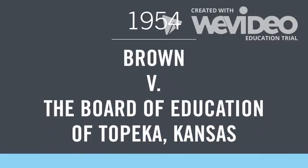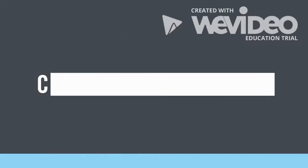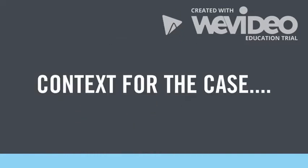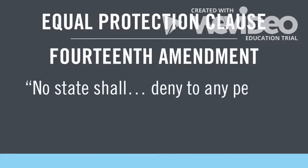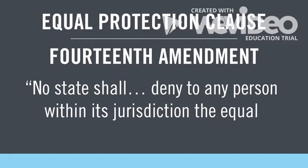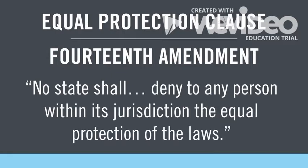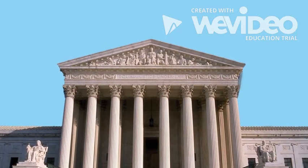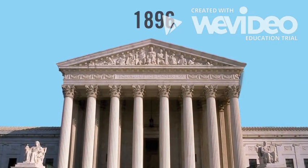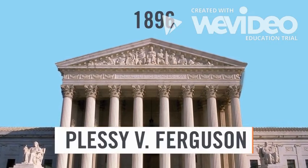To understand this landmark case, it's important to appreciate some context. The Equal Protection Clause of the 14th Amendment reads: 'No state shall deny to any person within its jurisdiction the equal protection of the laws.' However, the Supreme Court denied equal justice in the 1896 case of Plessy v. Ferguson.